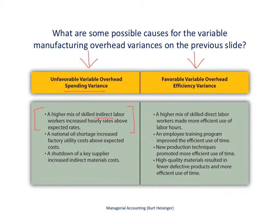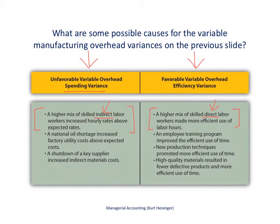For the favorable variable overhead efficiency variance, remember that our variable overhead costs are allocated based on direct labor hours, so we are now talking about direct labor workers. Because our direct labor workers worked fewer hours than expected, we had a favorable variance. One possible cause is a higher mix of skilled direct labor workers than initially anticipated, making them more efficient than expected and leading to the favorable variable overhead efficiency variance. There are other possible causes listed here as well that you can review on your own.